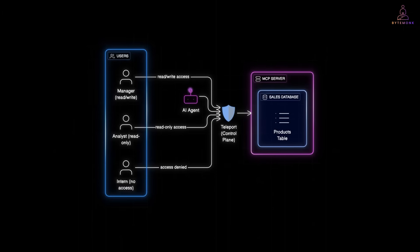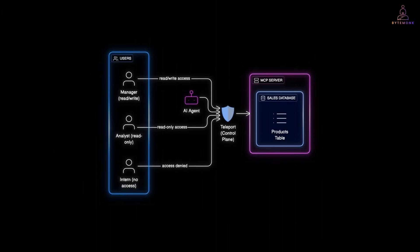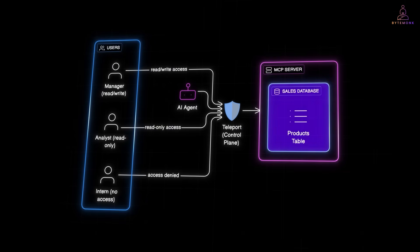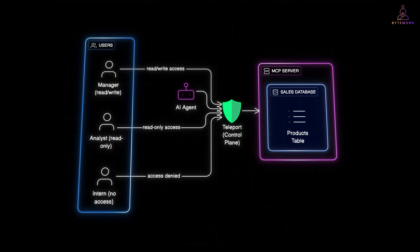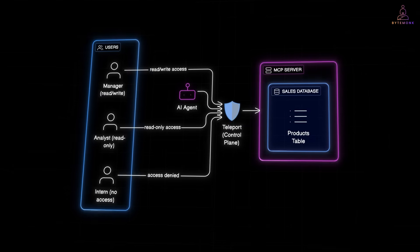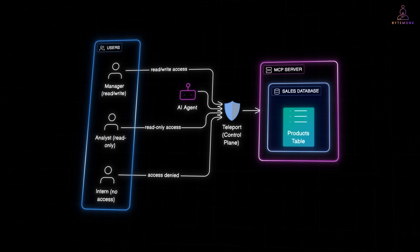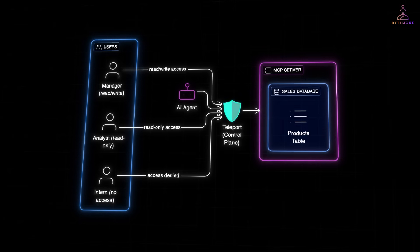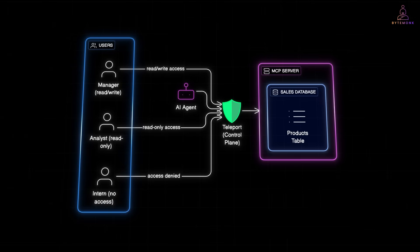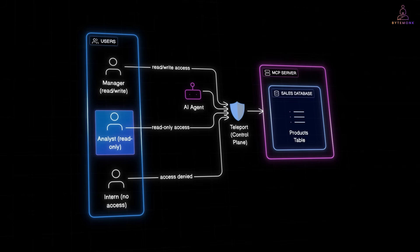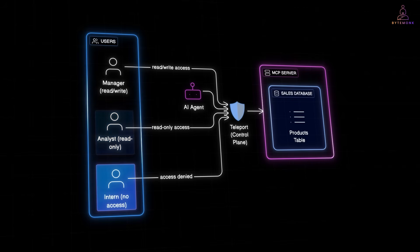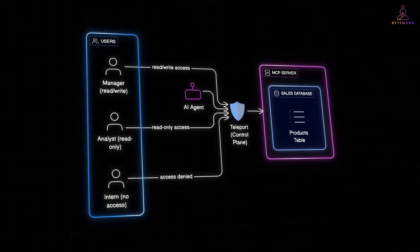Let's walk through how this actually works in practice. We have a simple sales database connected as an MCP server. Teleport is sitting in the middle as the control plane. The database has a products table. Roles are defined in Teleport: analyst with read-only access, intern with no access, and a manager with read and write access.